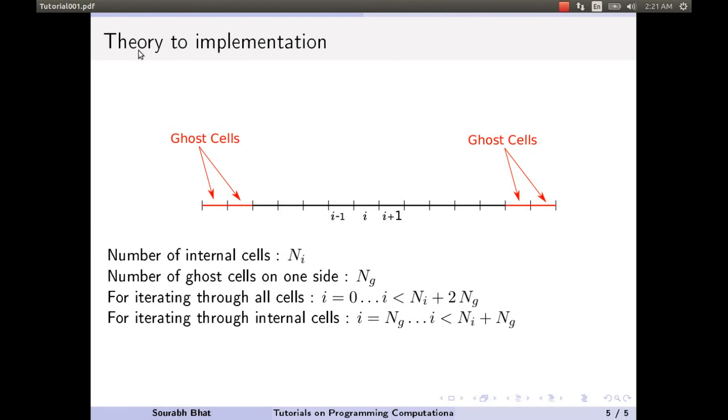Now, when we actually implement it, we will also need these ghost cells. These ghost cells are required for applying the boundary conditions. We will be applying boundary conditions using the ghost cells. I'll talk about this later when I actually do the implementation of boundary conditions because I will have to specifically talk about some indices and how do we tackle these extra cells and so on and so forth.